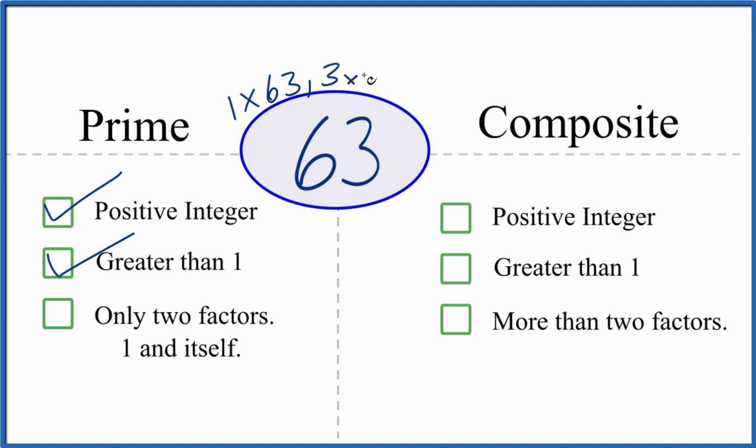3 times 21, that would equal 63. And then 7 times 9, that's 63 as well. So there are more than two factors. So 63 is not a prime number.